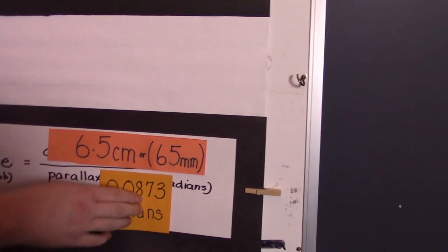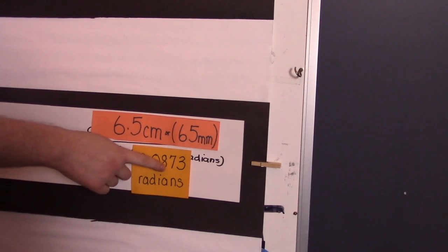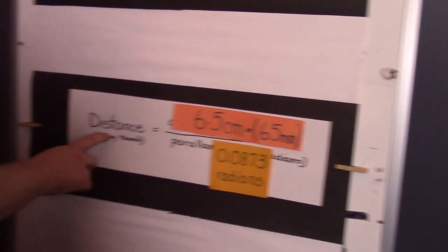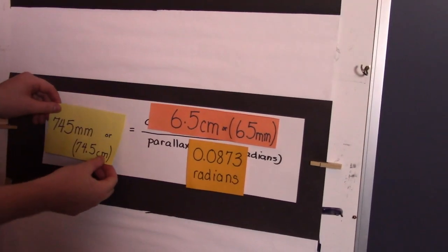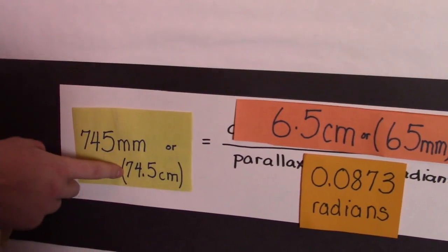Then we take 65 millimeters or 6.7 centimeters divided by 0.0873 radians and we get the distance to my thumb which I calculated to be 745 millimeters or 74.5 centimeters.